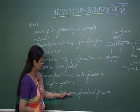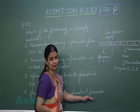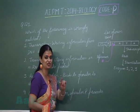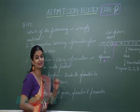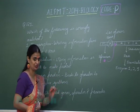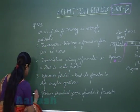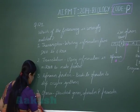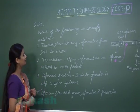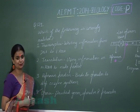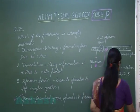The last option states that the operon consists of structural genes, operator, and promoter — but the regulator gene is missing from this definition. The regulator gene is missing, so we can say this is the incorrect option for question 121.